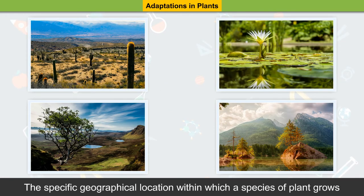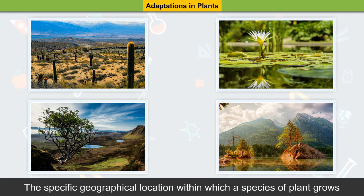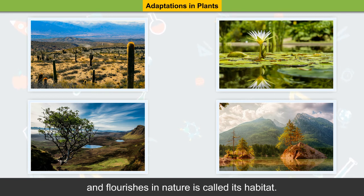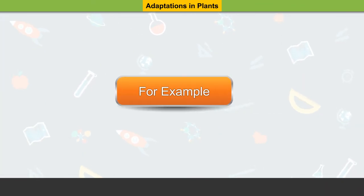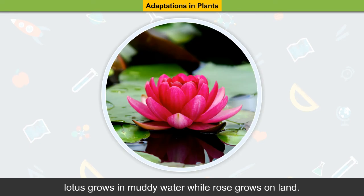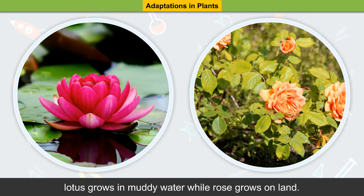The specific geographical location within which a species of plant grows and flourishes in nature is called its habitat. For example, lotus grows in muddy water while rose grows on land.